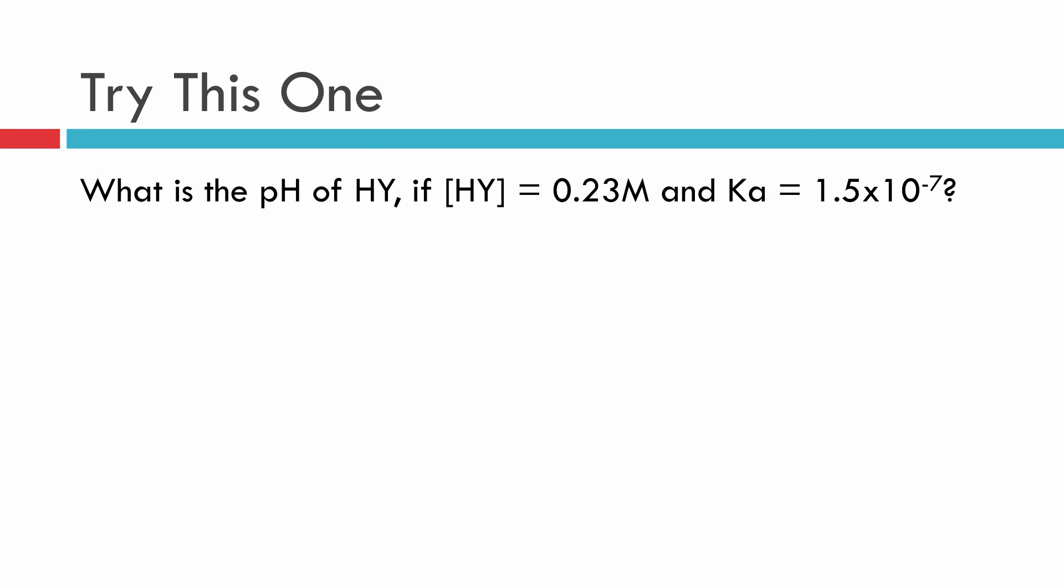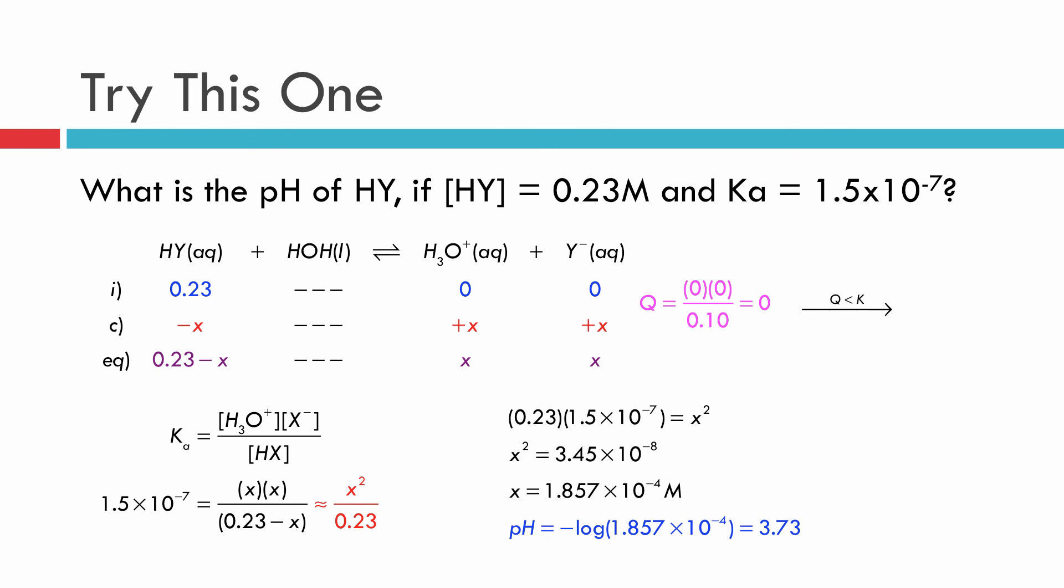With that in mind, why don't you try this problem right here? See if you can get an answer for this and stop the video, give it a try and use the small x approximation if you think it's applicable. And then you can start the video again and you'll see the answer all written out for you. So here you see the answer is 3.73 using the small x approximation. And that actually works out just fine and matches if you'd done the quadratic as well. So I hope this helped you out in learning how to do an equilibrium problem for an acid and base and something with a small equilibrium constant. There's another video upcoming on base equilibrium to help you do these kind of problems as well.